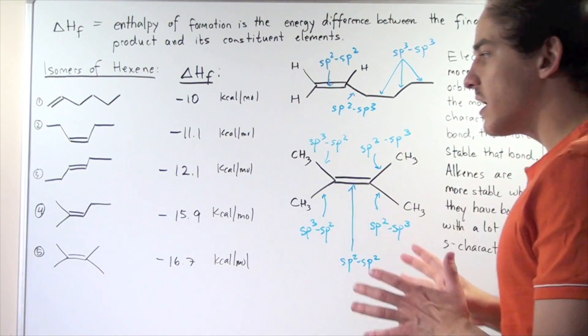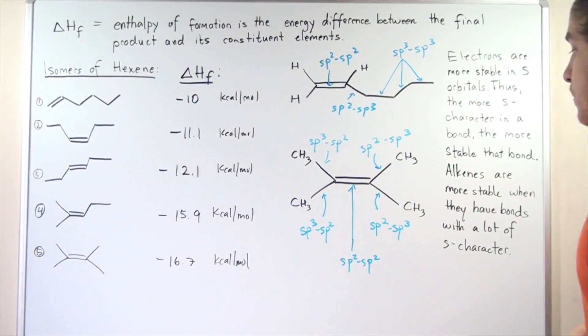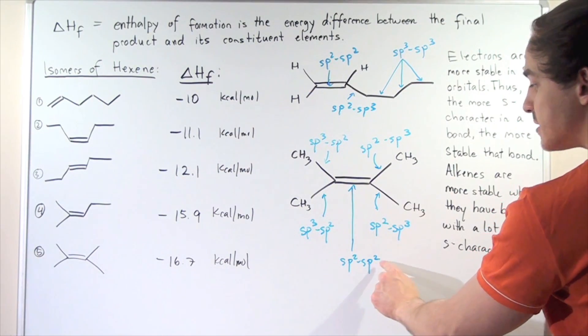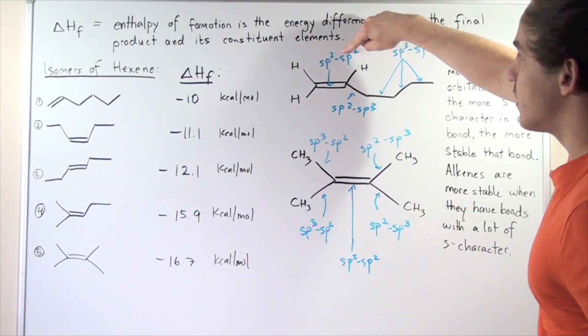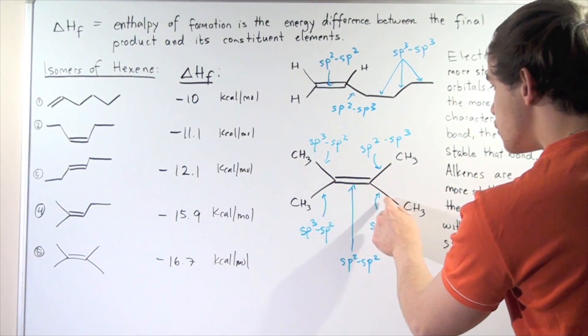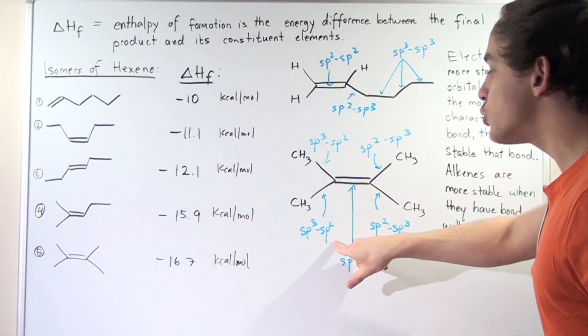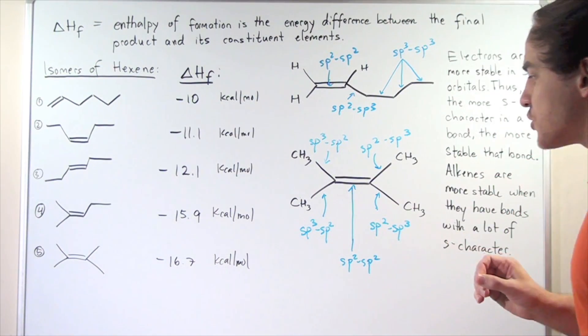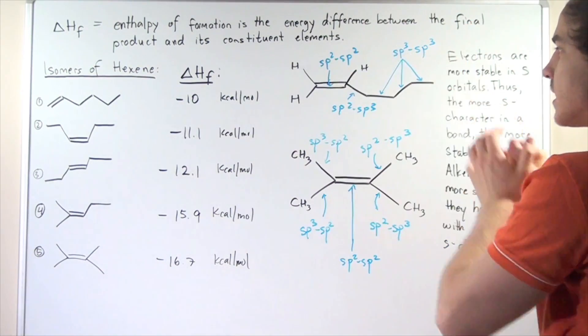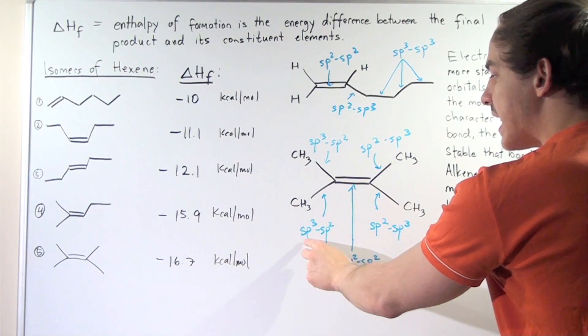So now let's compare the bonds within compound five, within isomer number five. So once again, we have that same exact sp2, sp2 bond like we have here. And we have one, two, three, four sp3, sp2 bonds. So notice, we have more stable bonds within this compound than this compound because sp2 is more stable than sp3.